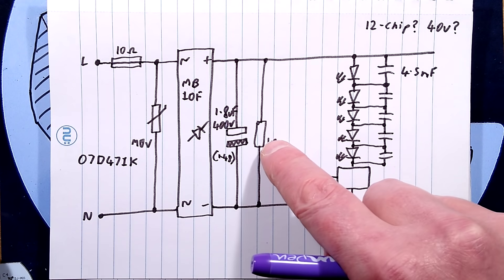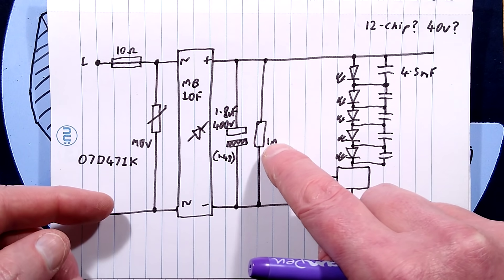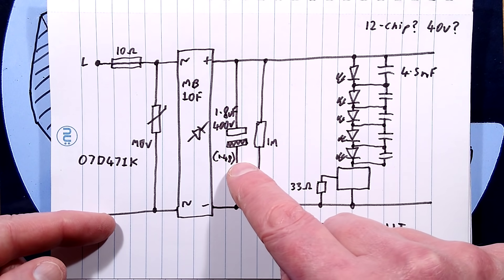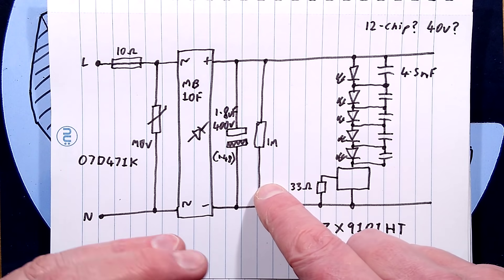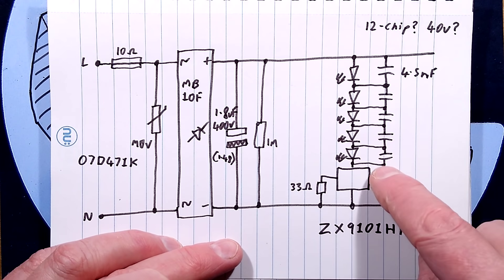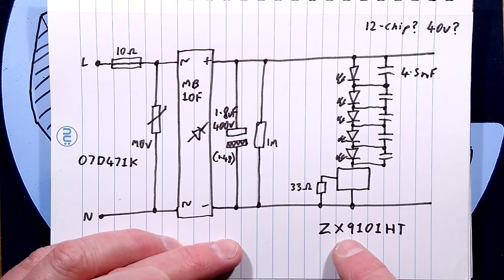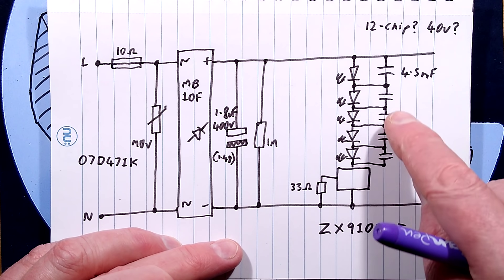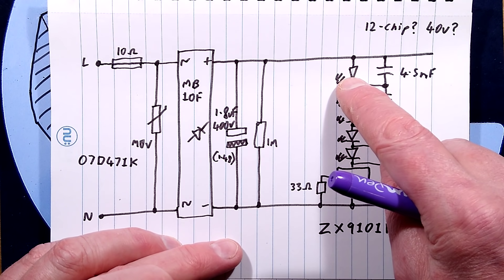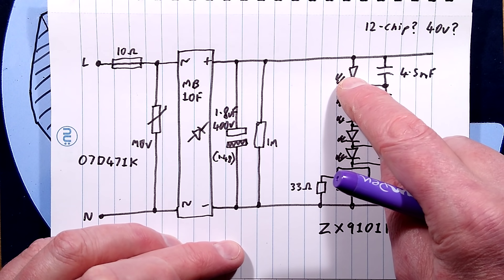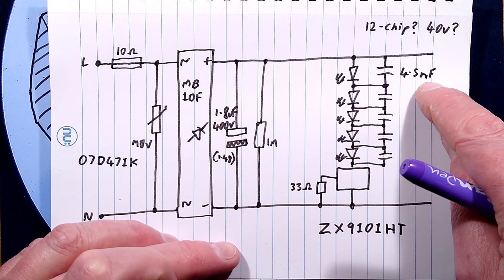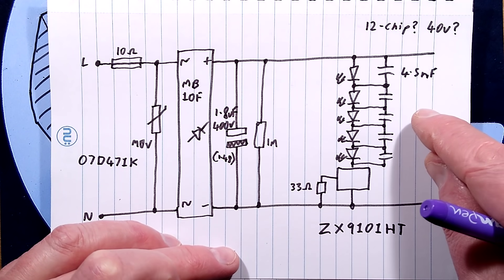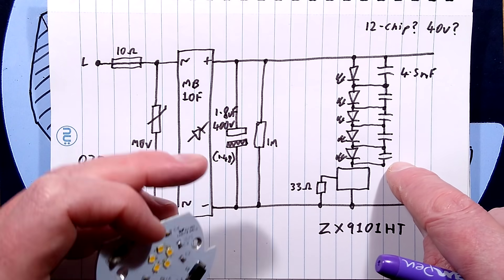As standard bridge rectifier, the capacitor, I did nip off the 1 megohm resistor and I measured the capacitance, 1.48 is what it came in at. There's that discharge resistor and then there's the simple regulator circuit, the ZX9101HT. I reckon that these might be 12-chip LEDs, which means they're going to be dissipating a lot of heat and they're probably going to be about 40 volts each. With those little 4.5, I'd guess actually 4.7 plus tolerance, nanofarad capacitors across them.